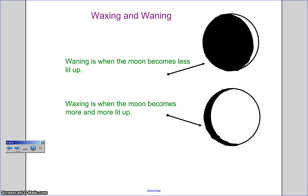Next, waning and waxing describe how the moon is lit up. Waxing is when it seems to be becoming more lit up — a good way to remember this is that waxy things can look shiny. Waning is when the moon seems to be getting smaller in size and less lit up. These are examples for each.